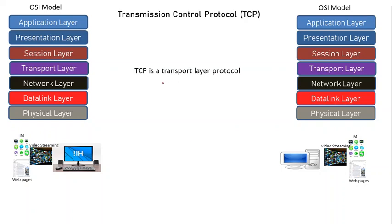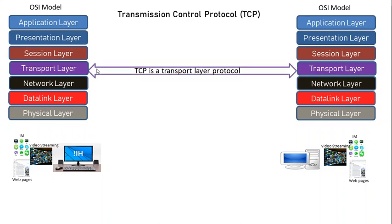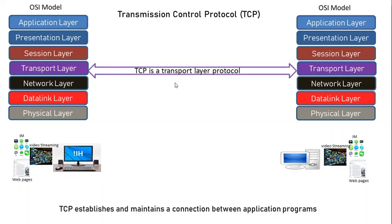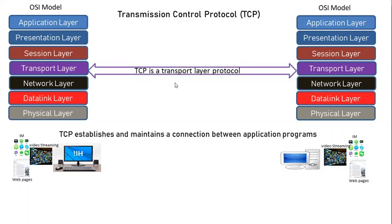Today we are going to discuss Transmission Control Protocol. With reference to the OSI model, TCP is the transport layer protocol. When using a computer or any electronic gadget connected to the internet, we might be using different application programs like email, instant messaging, or video streaming, and those can be communicating with other application programs on remote hosts.